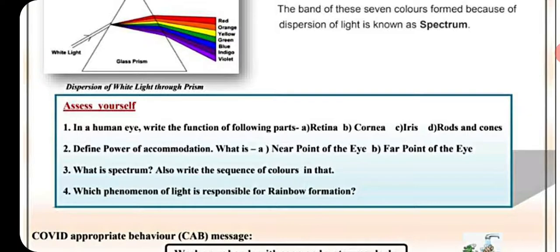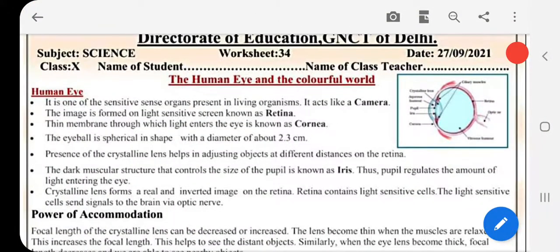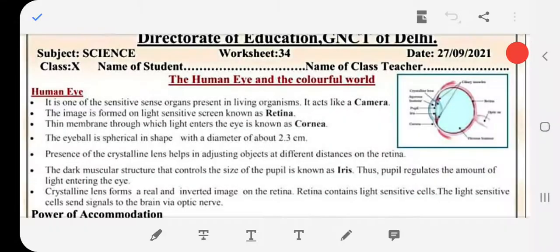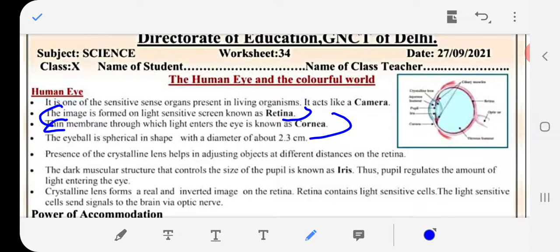Question: In a human eye, write the function of the following — retina, cornea, iris, rods and cones. Retina: the image is formed on the light-sensitive screen known as the retina. Cornea: the thin membrane through which light enters the eye is known as the cornea. Iris: the dark muscular structure that controls the size of the pupil is known as the iris.